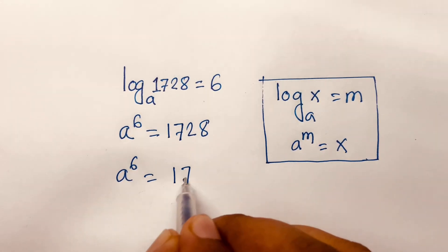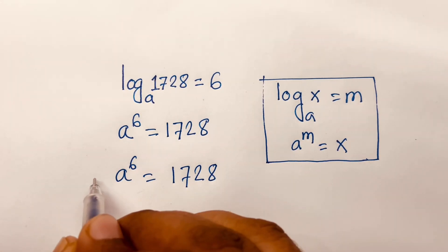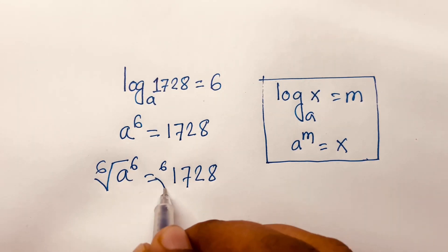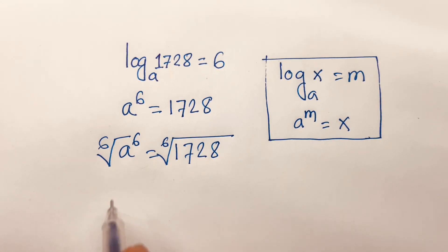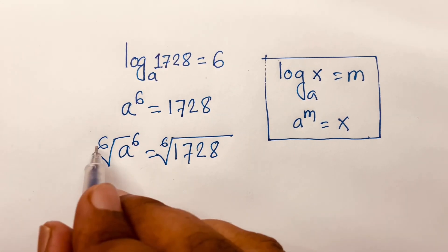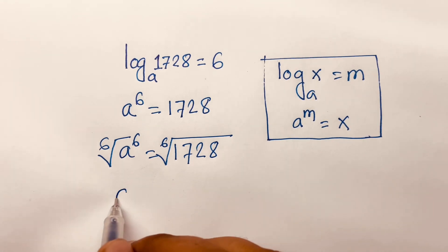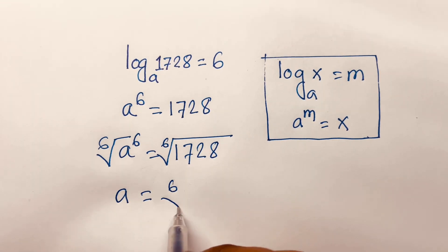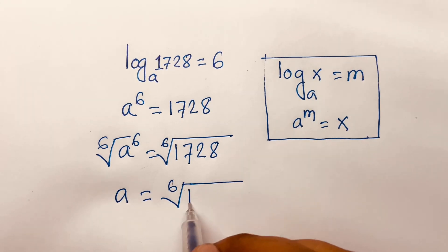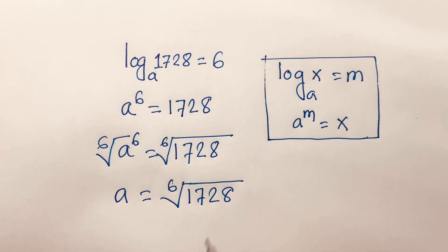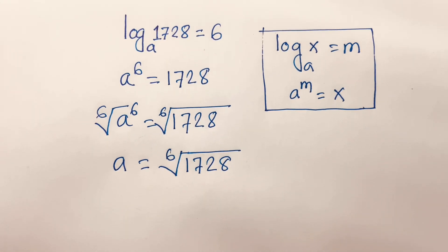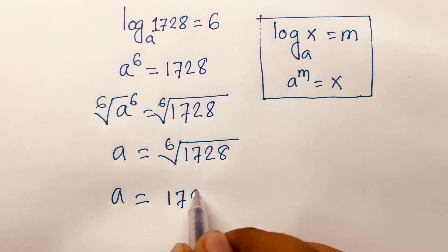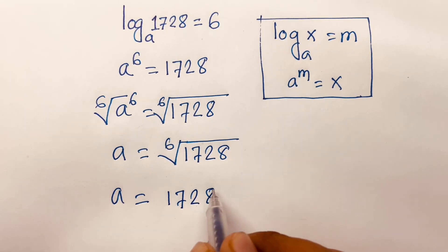We apply the 6th root to both sides — the 6 and the 6th root cancel — so a is equal to the 6th root of 1728, which is 1728 to the power 1 over 6.